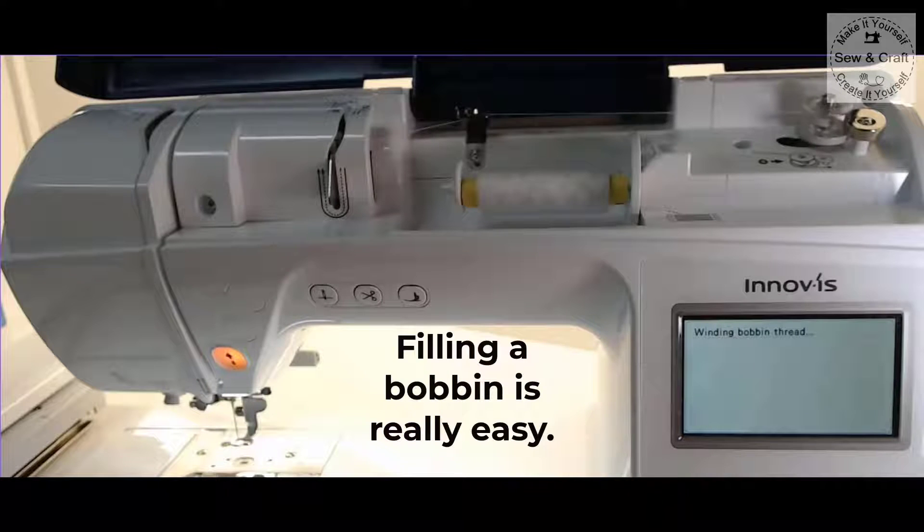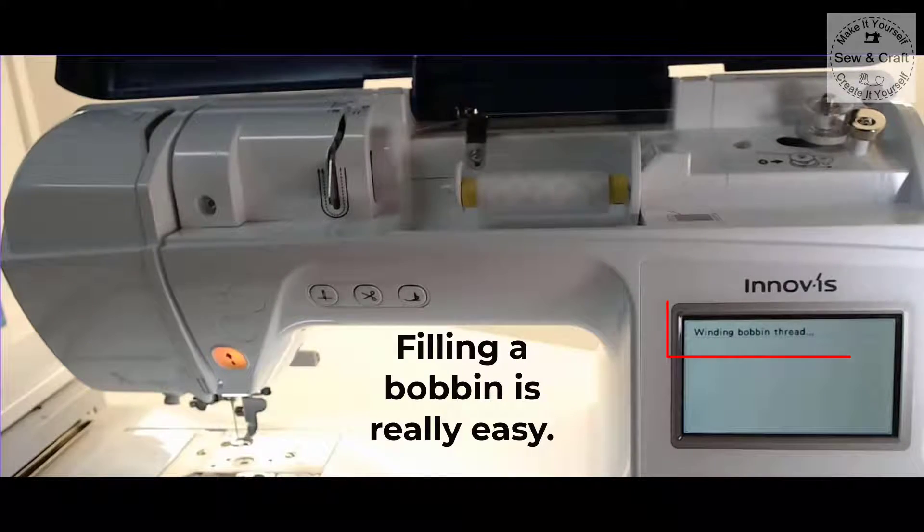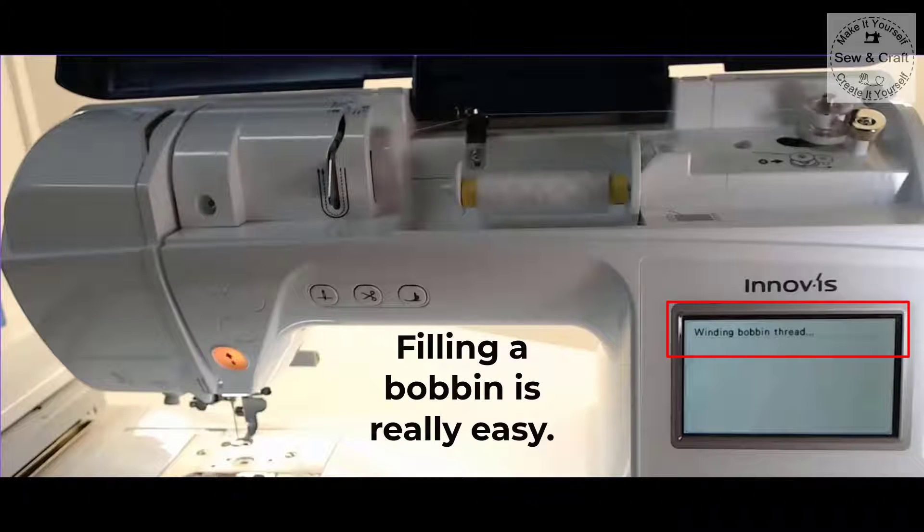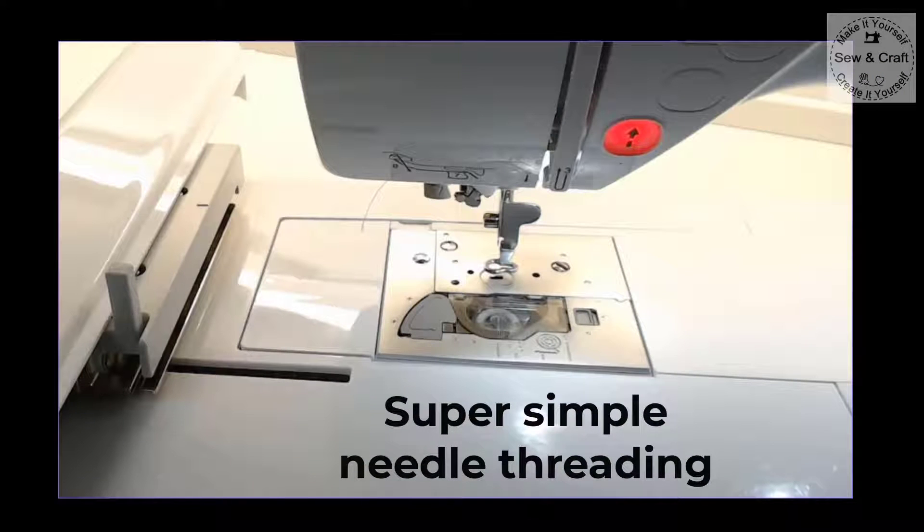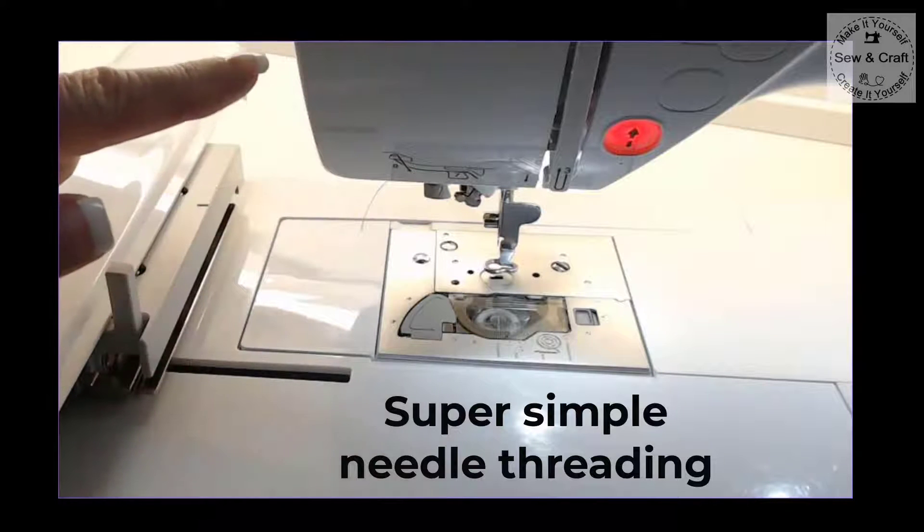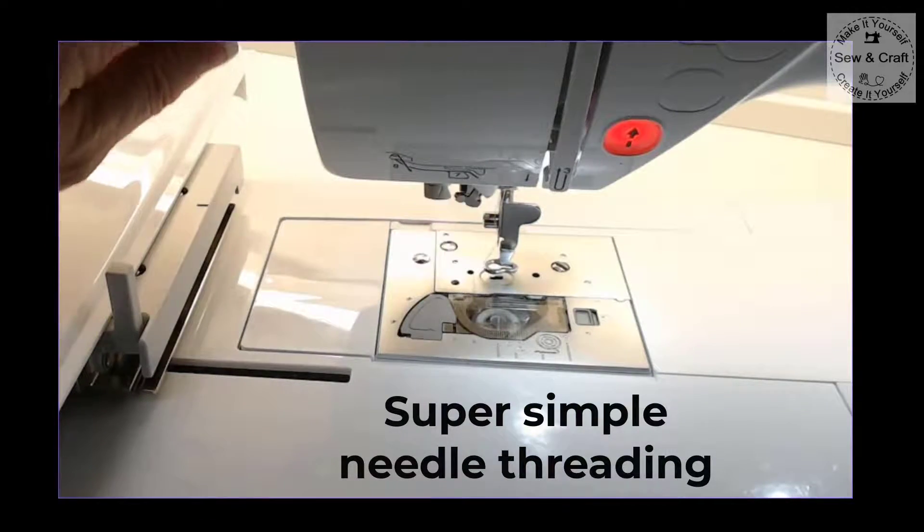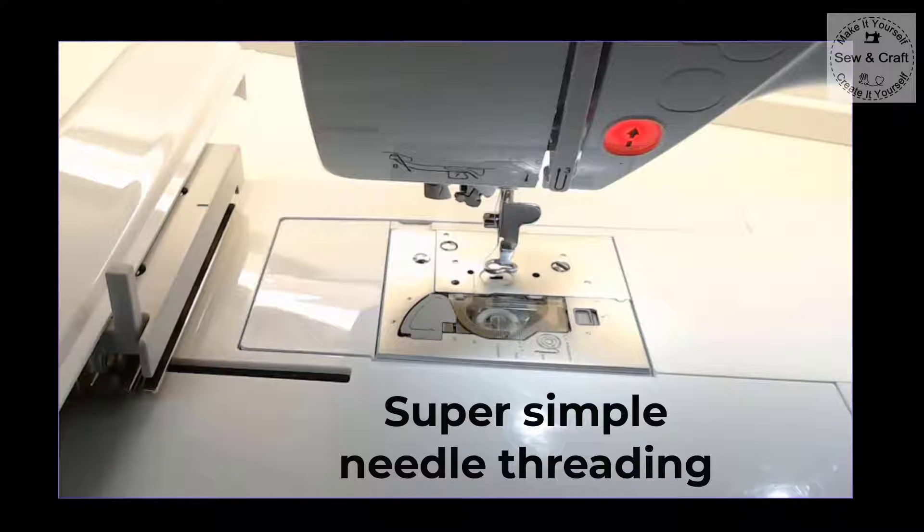Simply press the start stop button and the machine will tell you it's winding the bobbin thread. Once the bobbin is full you'll press the start stop button again. Threading the needle is also really easy. You simply follow the numbered guides on the machine, press the little lever and it will shoot the thread through the eye of the needle and you're ready to embroider.